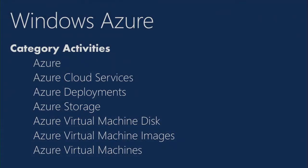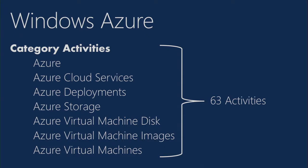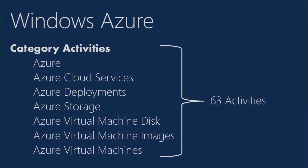With the Windows Azure integration pack, you can use Orchestrator to deploy virtual machines and services, create disks, or clean up those items. The seven activity categories can be configured in 63 different ways to suit your scenario. One of my favorite use cases is running a runbook that checks the age of virtual machines, emails the owners asking if it's okay to delete them, or asks them to delete it — a simple VM aging report.